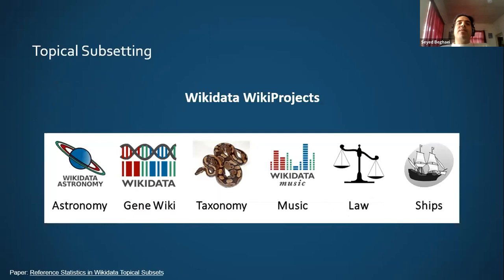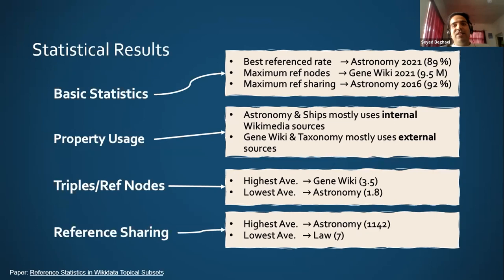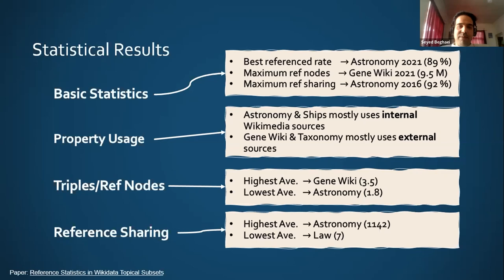The tool we use for subsetting is WDumper, based on the Wikidata Toolkit Java library. With WDumper we can create topical subsets — a subset of Wikidata around a specific topic — as well as random subsets. We did an evaluation on the tool, published in 2021. In the next step, we performed a basic statistical investigation to better understand the structure of references in Wikidata. We used WDumper to extract six Wikidata WikiProjects: GeneWiki, Astronomy, Taxonomy, Music, Law, and Chips. In these subsets, we investigated references statistically, extracting basic statistics like which subset has the most references and referencing rates, what types of properties are used in references more, and getting familiar with the concept of reference sharing — when a single reference is shared between many statements.